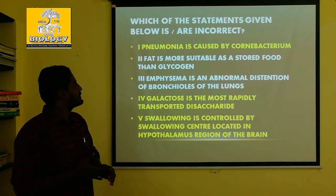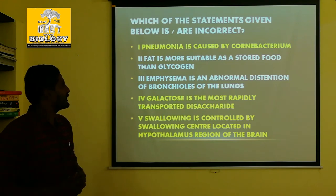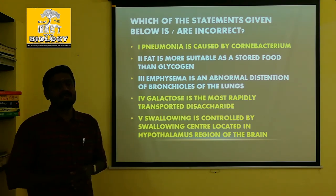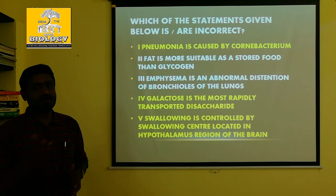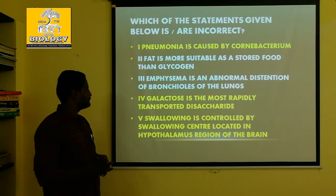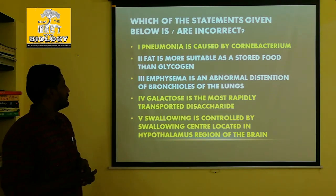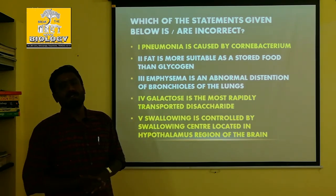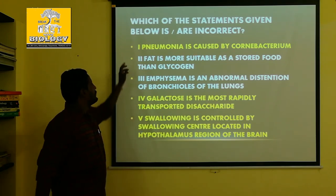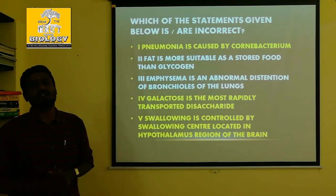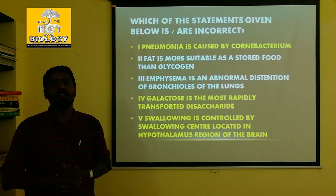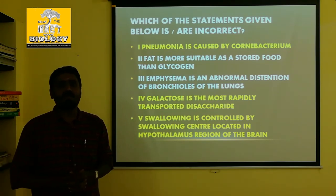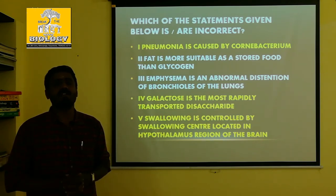Emphysema is an abnormal distension of bronchioles of the lungs — this is true. Next, galactose is the most rapidly transported disaccharide — this is wrong, because galactose is not a disaccharide; it is a monosaccharide. Swallowing is controlled by the swallowing center located in the hypothalamus — this is wrong; it should be medulla oblongata. So the incorrect statements are the first, fourth, and fifth.